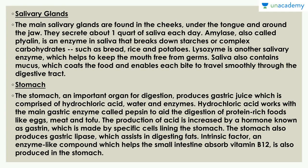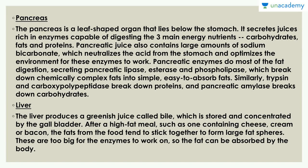The stomach is an important organ for digestion, producing gastric juice comprised of hydrochloric acid (HCl), water, and enzymes. HCl works with the main gastric enzyme pepsin to aid digestion of protein-rich foods like eggs, meats, and tofu. Production of acid is increased by the hormone gastrin, made by specific cells lining the stomach. The stomach also produces gastric lipase for fat digestion, and intrinsic factor, which helps the small intestines absorb vitamin B12, also known as cyanocobalamin.